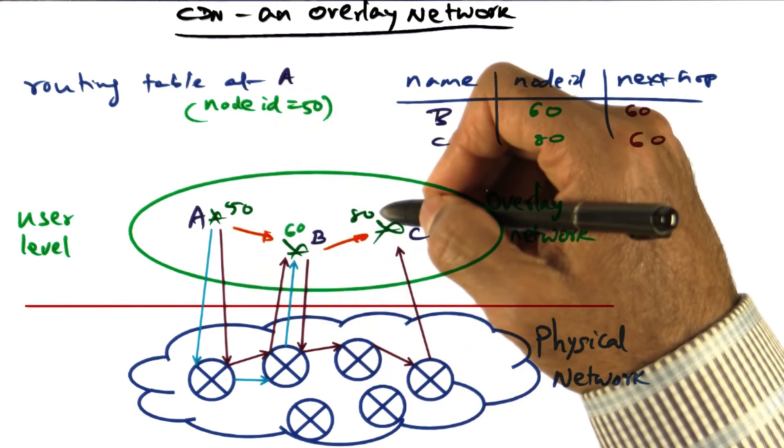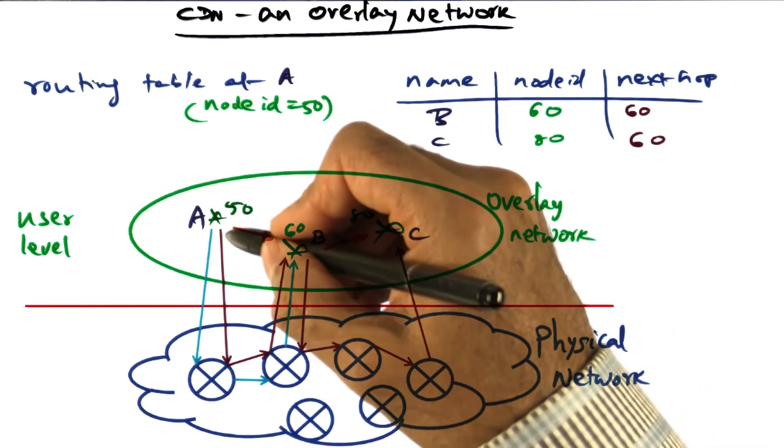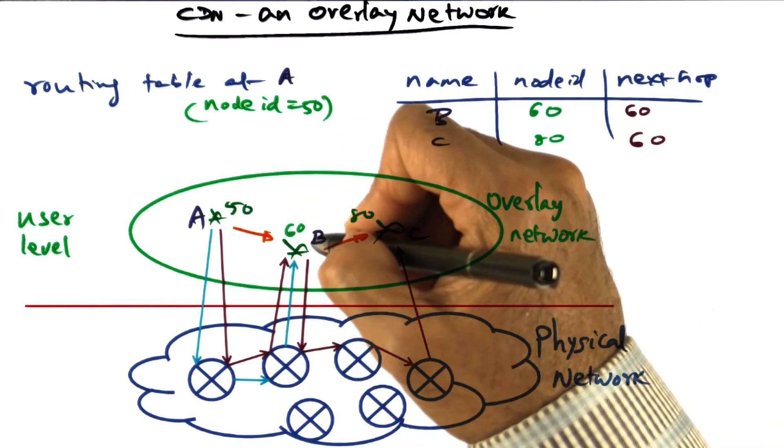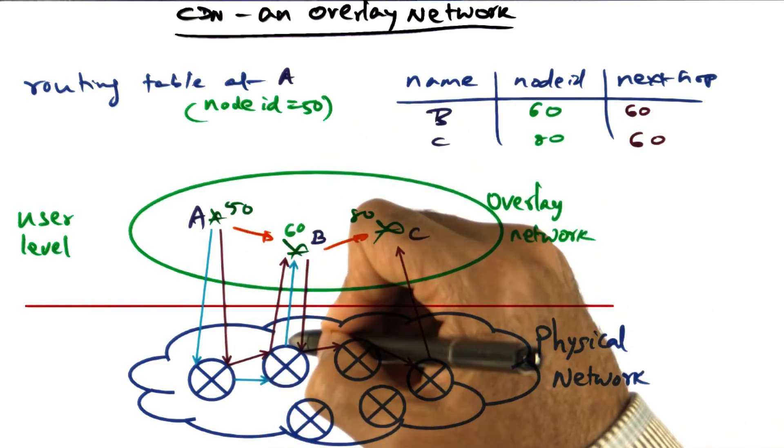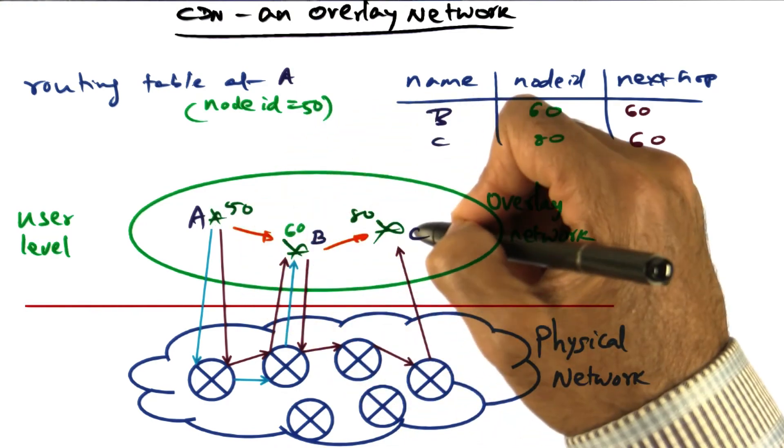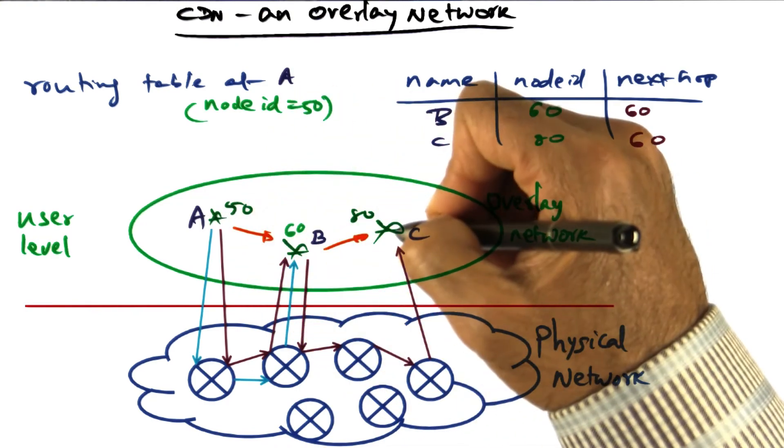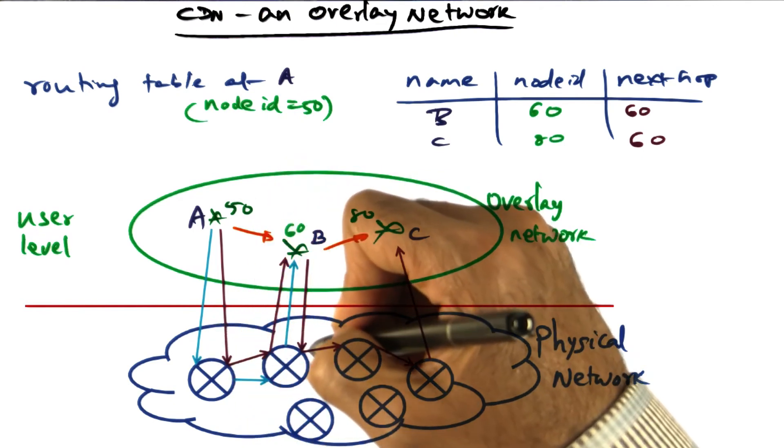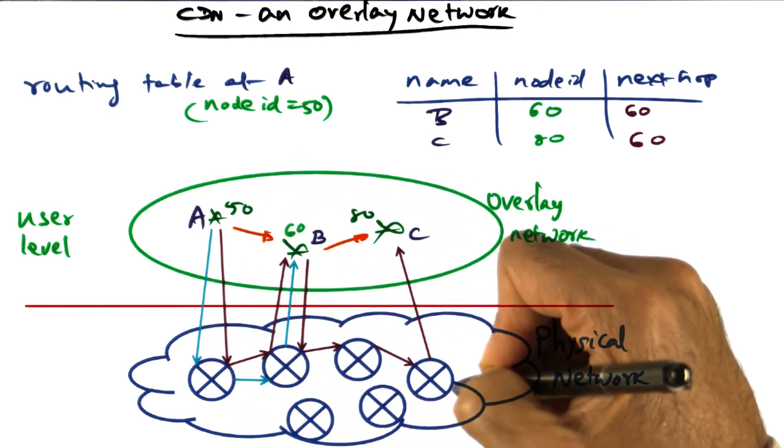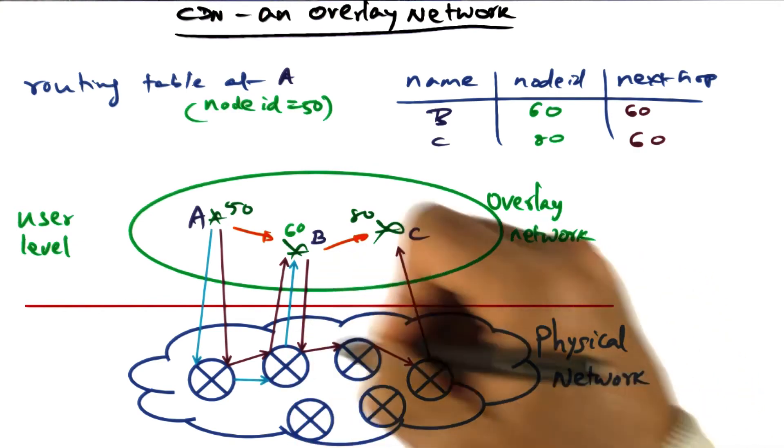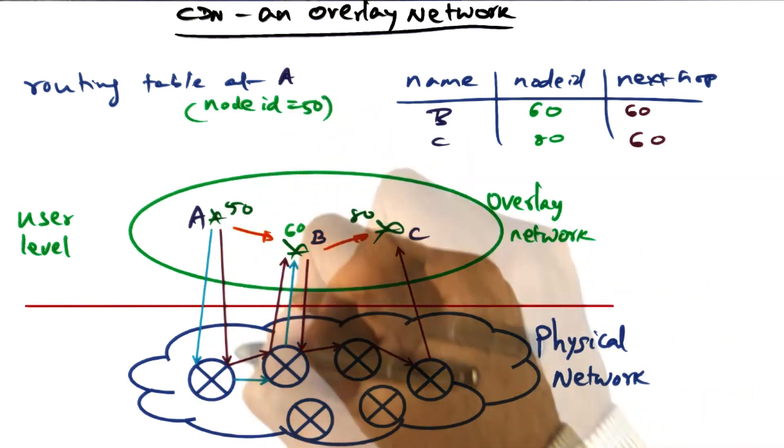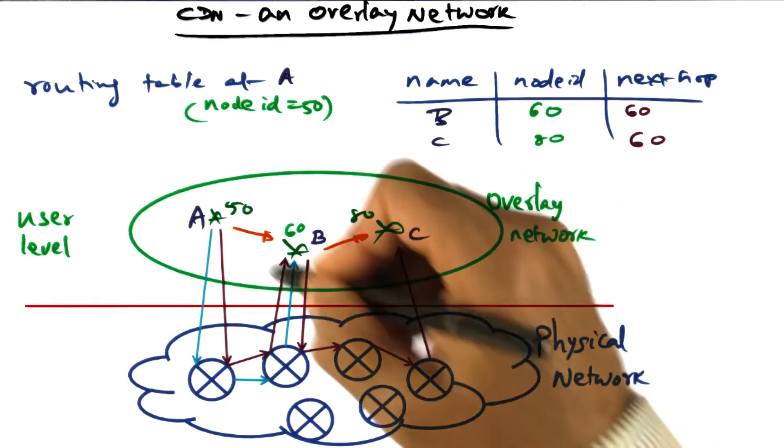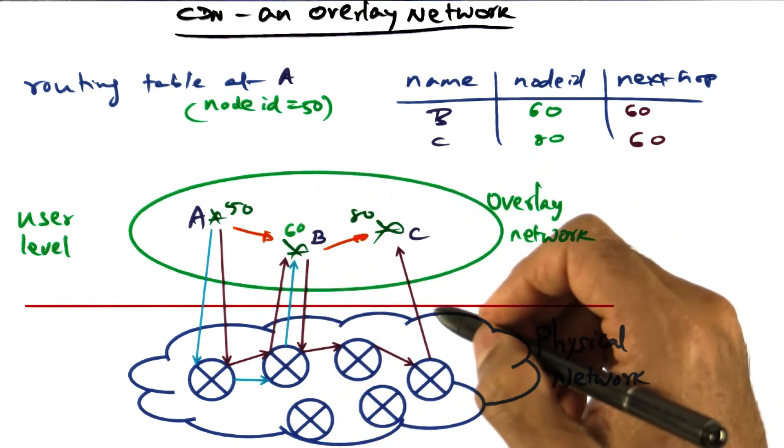But in reality, under the covers, when I send this message from A to B, it goes through the physical network. And when sending from A to C, even though there are two hops at the overlay level, internally the physical network may incur many more hops to eventually reach destination C.